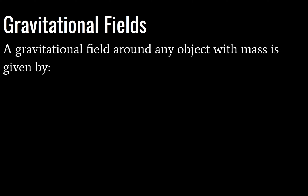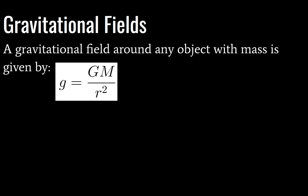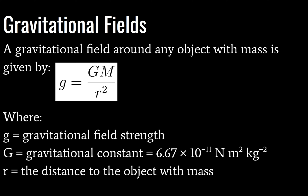So first, let's take a look at gravitational fields. Later on we will move into electric fields. I'm going to give you a formula. A gravitational field around any object with mass will be given by this equation where g is equal to big G times big M divided by R squared. Big G is the gravitational constant and this is in your data booklet. R is the distance to the object with mass, and of course small g is gravitational field strength. On Earth, this would be approximately 9.81 meters per second squared.